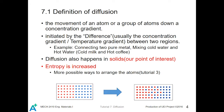Diffusion is the movement of an atom or a group of atoms down a concentration gradient. It is normally initiated by a difference — usually the concentration gradient or the temperature gradient — between two regions. In the first picture, two regions are distinct: the red atoms and the blue atoms haven't mixed yet, but during the diffusion process these two types of atoms mix, following the concentration gradient.